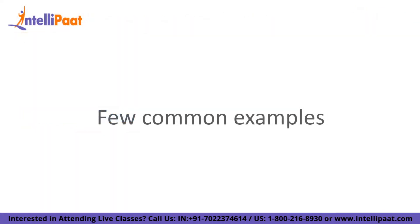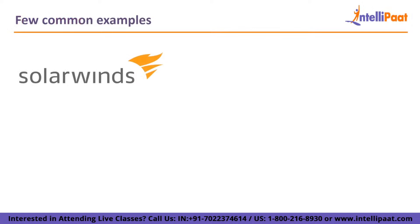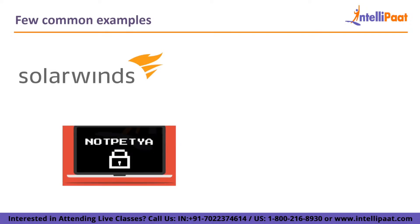Now let us go through some of the infamous examples where supply chain attacks have happened in the industry. 1. SolarWinds: Updates to SolarWinds Orion network monitoring software contained a backdoor that a hacking group had hidden after gaining access to the company's production environment in 2020. Customers of SolarWinds who were using the malicious update experienced security problems and data breaches. 2. NotPetya: Computers were encrypted by the bogus ransomware known as NotPetya, but it did not store the secret key for decryption. The NotPetya attack started as a supply chain strike when a Ukrainian accounting firm was hacked and malware was incorporated into a malicious update.